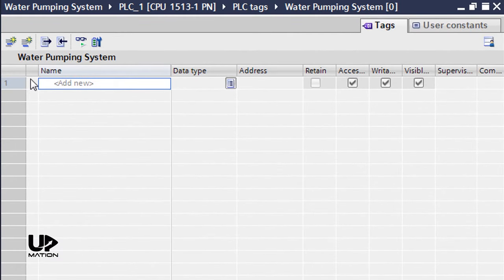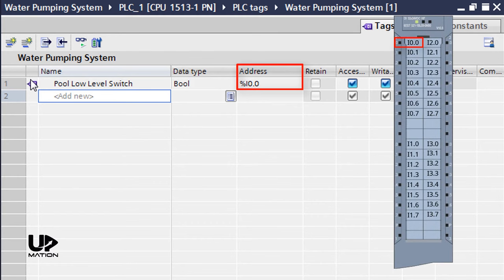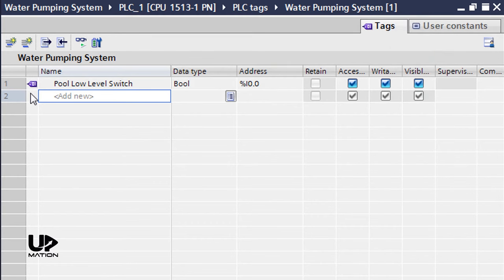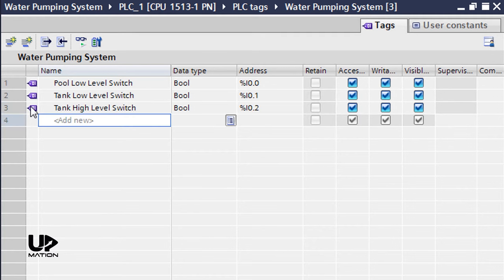The first input is the Pool Low Level Switch. By pressing Enter, the software automatically assigns the I0.0 address to this input, which is the first channel of our only DI card. The next one is the Tank Low Level Switch with the address of I0.1. And the last input signal is Tank High Level Switch with the address of I0.2. Finally, there is our only output which I will name as Motor-Pump.